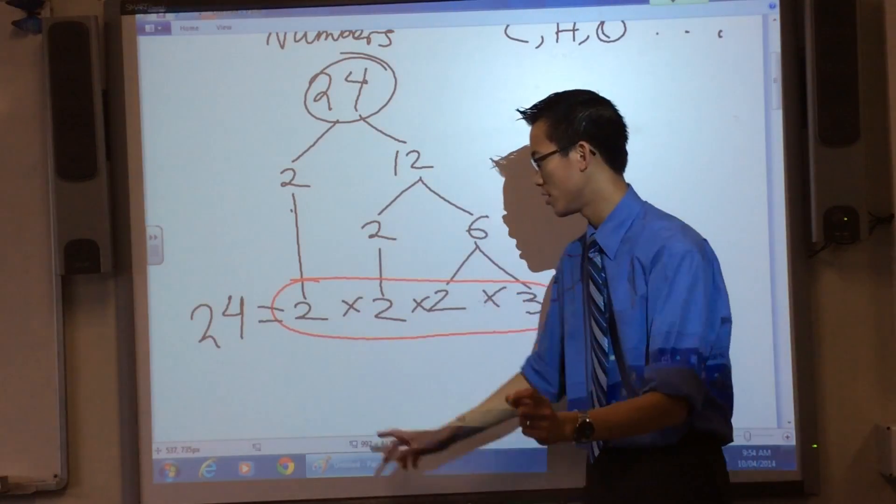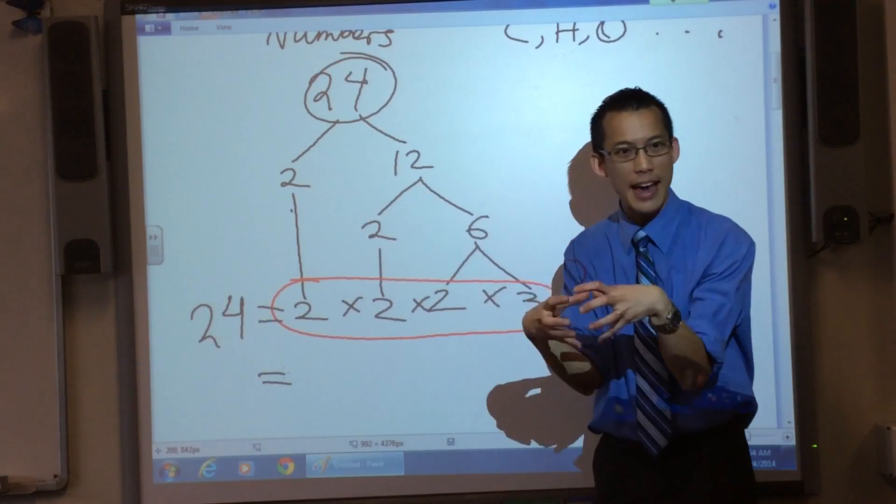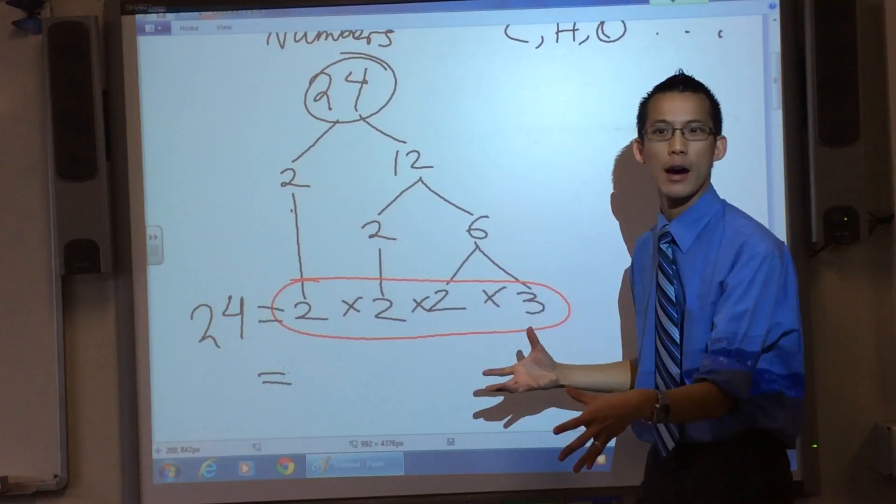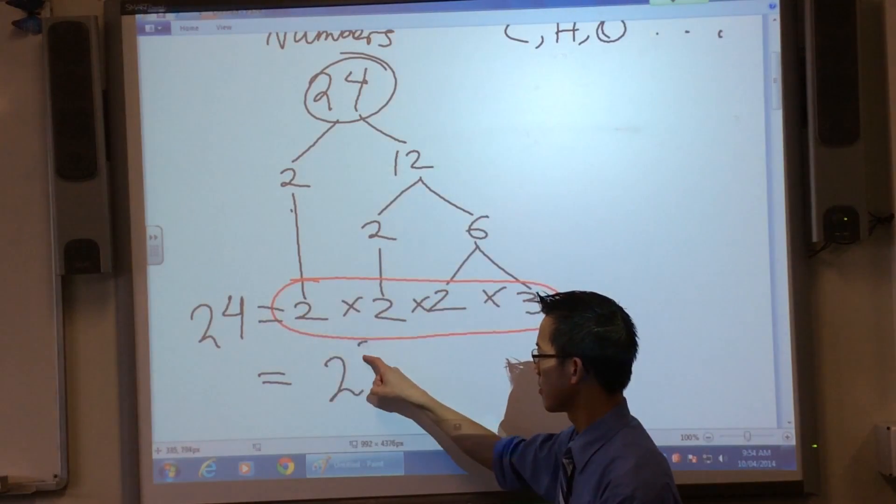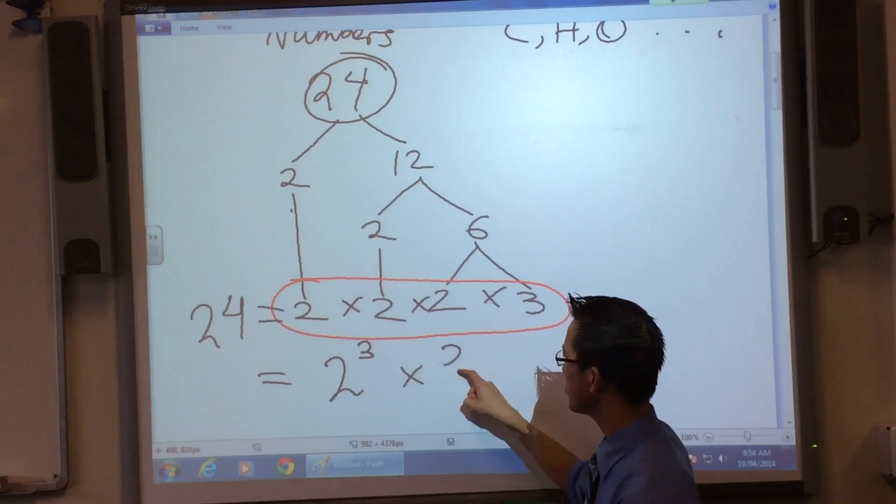Now you've already learned index notation. So we know a much more concise, succinct way to write this. How would we write it? 2 to the power of 3 times 3. Good.